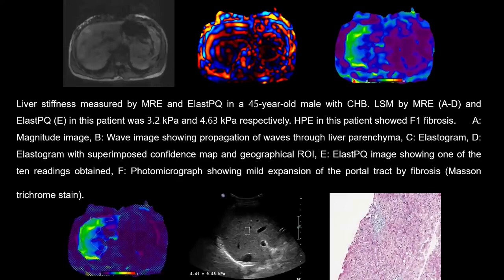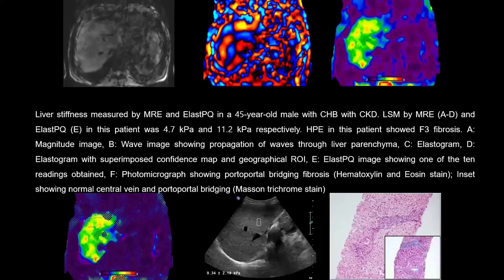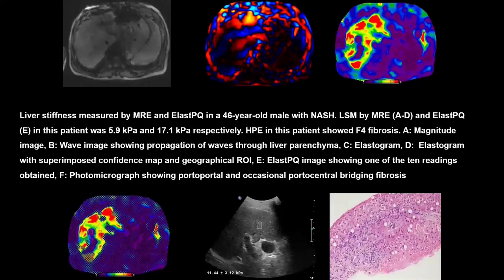In F1 fibrosis, the color elastogram maps show colors towards the violet side. This visual color coding helps evaluate fibrosis. In F2 fibrosis, the color moves towards the middle of the scale. In F3 fibrosis, some shades of red appear within the liver parenchyma. Always look at the magnitude image and the wave maps — the second image — confirming that shear waves are progressing well. In F4 fibrosis, shades of red dominate the color elastogram maps, representing the highest grade of fibrosis detected.